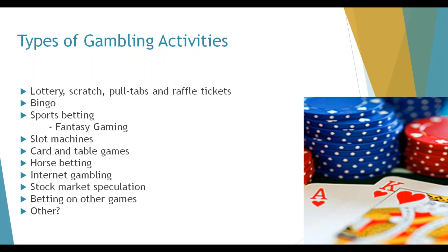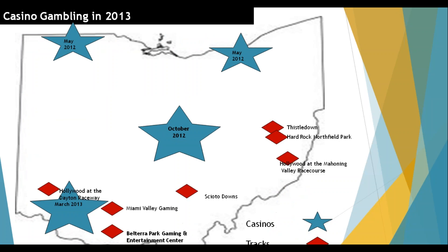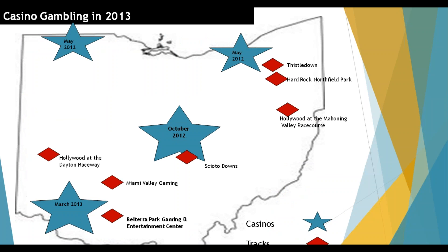In Ohio, sports betting and internet poker are illegal, but fantasy gaming is still legal, though it's being outlawed in a number of states. Ohio has four casinos and seven racetracks or racinos, which have video lottery terminals — essentially slot machines. Over the past couple of years, Ohio has had a big boom in casino-style gambling.